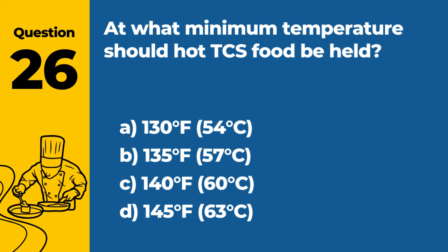Question 33: What is the recommended procedure for handling a customer's report of a foreign object in their food? A. Apologize and offer a discount. B. Remove the object and serve the food to another customer. C. Investigate the issue, document it, and take corrective action. D. Blame the supplier or manufacturer of the food product. Answer: C. Investigate the issue, document it, and take corrective action. When a customer reports a foreign object in their food, the proper procedure is to investigate the issue, document it, and take corrective action to prevent future occurrences.